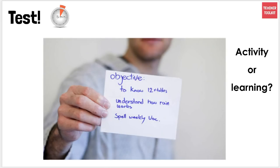The three objectives were: know your 12 times tables, understand how RAIN works, and spell weekly vocabulary. The bottom one — spell weekly vocabulary — is an activity; it's looking at recalling knowledge already learnt. The other two are more focused on learning: 'to know' your 12 times tables and 'understand how RAIN works.' Throughout the presentation, I'm going to ask how we can unpick these objectives to make them clearer and targeted to learning rather than to an actual activity.